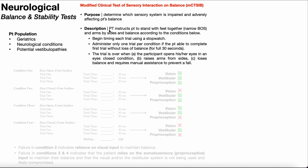To conduct the modified CATSIB, the PT will instruct the patient to stand with their feet together — a narrow base of support — and their arms by their sides, which is true of all four conditions. They will attempt to balance in that position for 30 seconds. You'll begin timing each trial with a stopwatch. Only one trial per condition is administered if the patient completes it without loss of balance. A trial ends when they reach the full 30 seconds, open their eyes in an eyes-closed condition, raise their arms to catch balance, or lose balance entirely and require manual assistance.